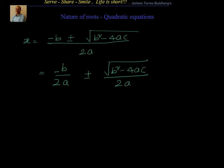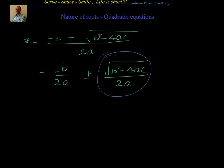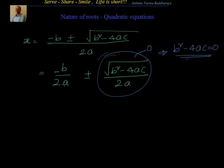Now, when will both values become equal? Both values become equal when the term √(b² − 4ac) / 2a becomes 0. If this term becomes 0, then x = −b/2a + 0 or −b/2a − 0, meaning both roots are the same. This happens when b² − 4ac = 0. So if b² − 4ac = 0, both roots of the quadratic equation are real and equal.